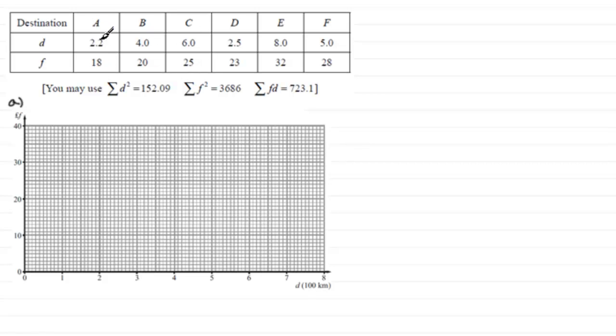So you've just simply got to plot them. Just go along the D-axis to 2.2 and then up on the F-axis at 18. So you're going to have a point somewhere around here. And if you repeat that for all the points, you should get a scatter diagram that looks something like this.